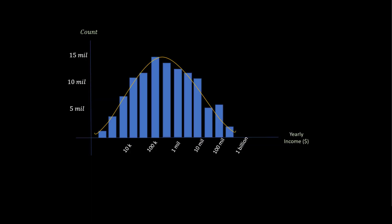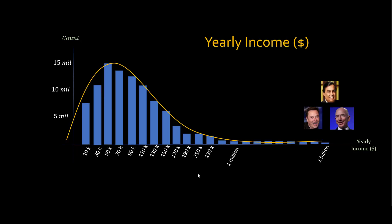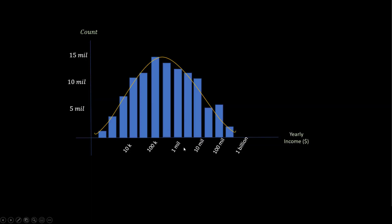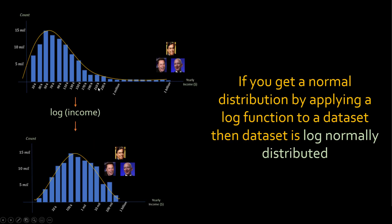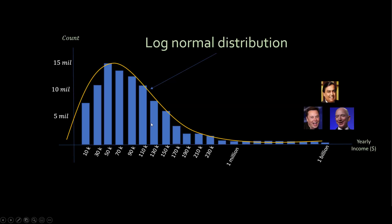But if you apply a log function to the x-axis, the distribution becomes normal. When I apply the log function to the x-axis, the spacing changes — this is the fundamental idea behind log: the scale is multiplicative by 10. So when I apply the log function to the x-axis, the distribution becomes normal. I had this right-skewed distribution, I apply log of income, and it becomes a bell curve. When that happens, the original distribution is called a log normal distribution. If you get a normal distribution by applying a log function to a dataset, then the dataset is said to have a log normal distribution.